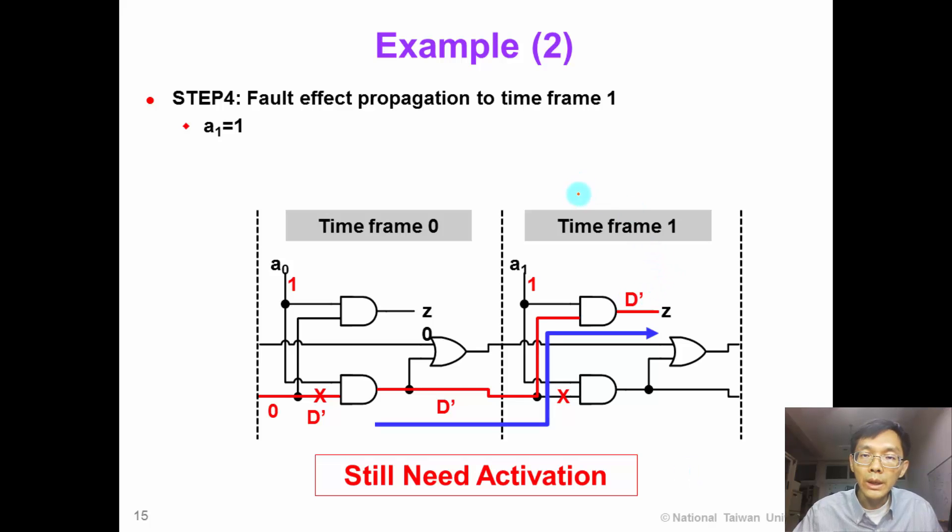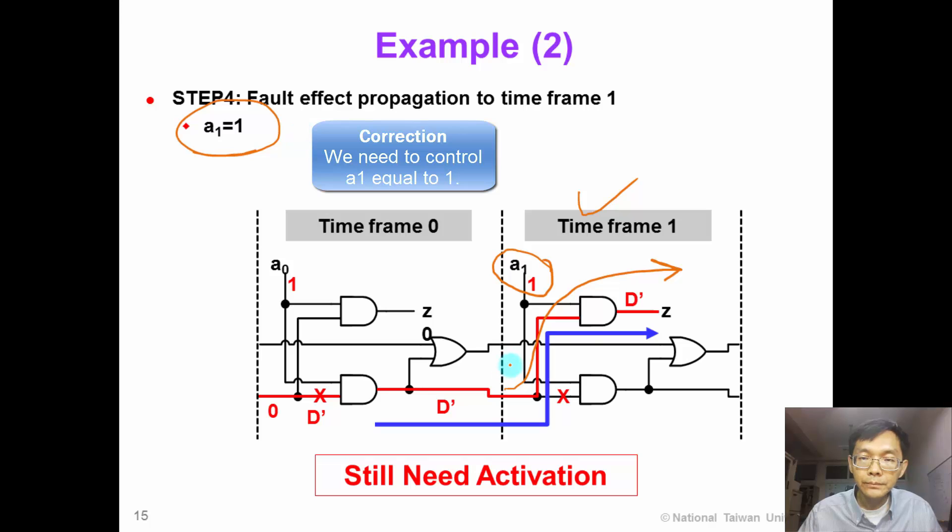Now let's create a new time frame 1, and we will try to propagate the fault effect to the primary output z. To do this, we will need to control y1 equal to 1. In this way, we can successfully propagate the fault effect to the primary output.